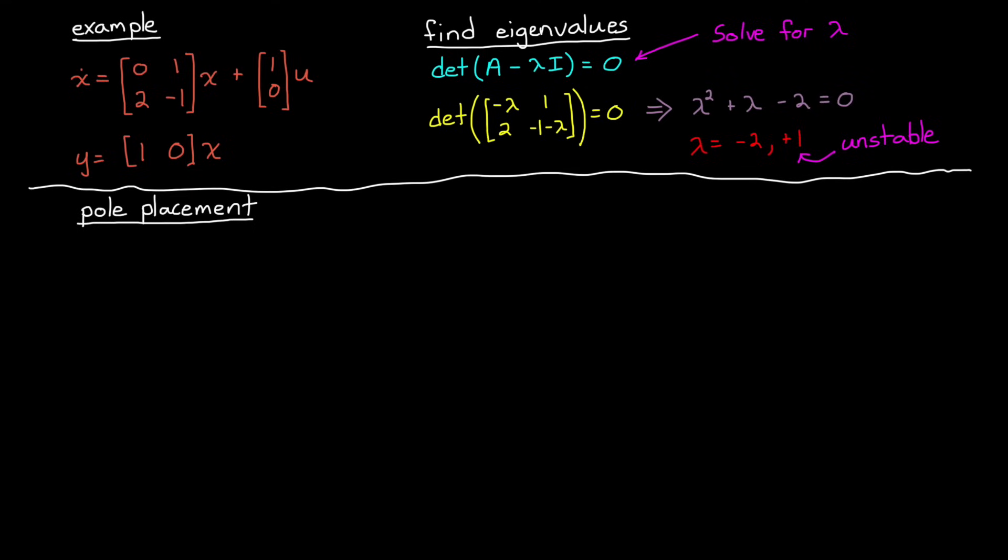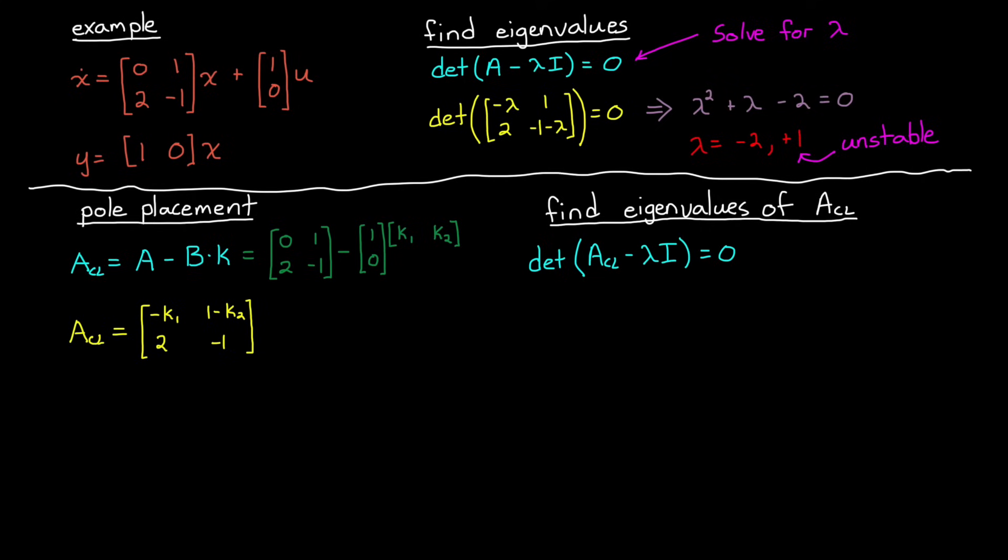Let's use pole placement to design a feedback controller that will stabilize this system by moving the unstable pole to the left half plane. Our closed loop A matrix is A minus BK, and the gain matrix K is a 1 by 2, since there's one output and two states. This results in minus k1, 1 minus k2, 2, and minus 1. And we can solve for the eigenvalues of ACL like we did before,